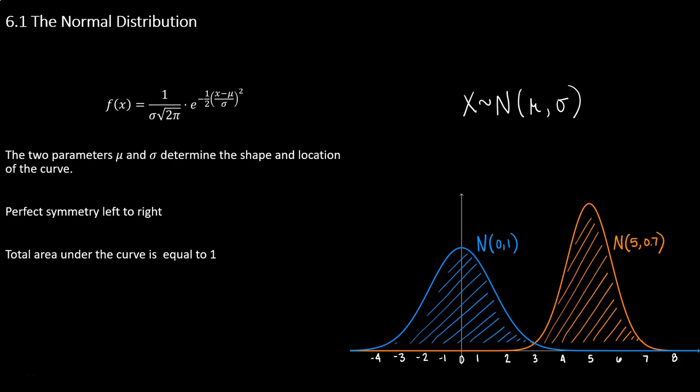The most important distribution for a continuous random variable is the normal distribution, also known as the bell curve. This distribution has a probability density function like the f of x you see on the screen. There are only two parameters inside of that function that can change the outcomes: mu, the mean, and sigma, the standard deviation. These two parameters dictate the shape and the location of the curve.